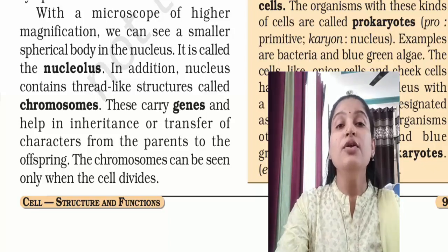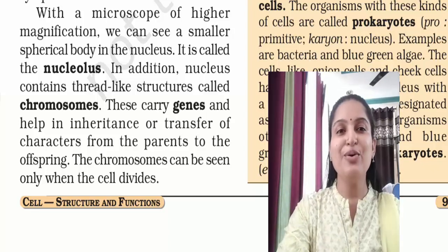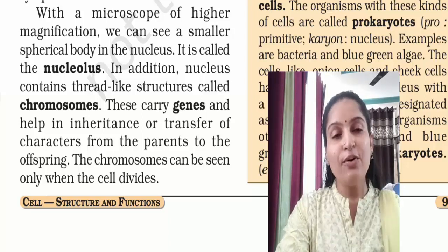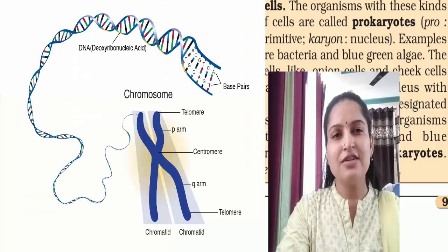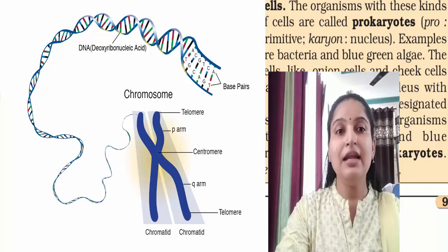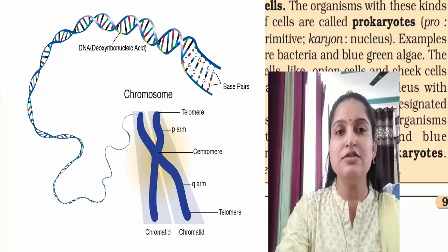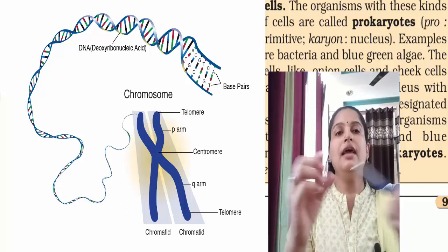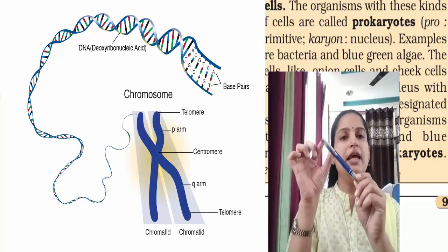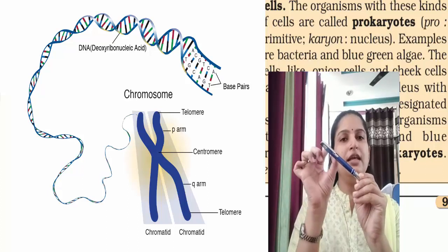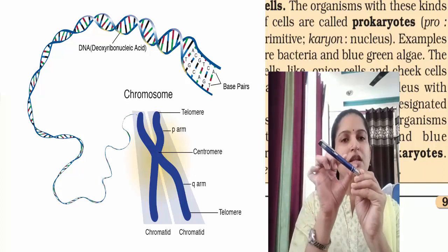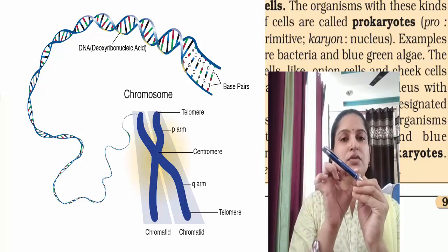Inside the nucleus we have chromosomes. Chromosomes are thread-like structures — like threads. On each chromosome there are many genes. Genes are sequences of DNA. Certain DNA sequences determine our features: the shape of our nose, our eyes, our mouth, our height — all these characters are located on genes. The sequence of a gene's DNA determines our genetic traits.